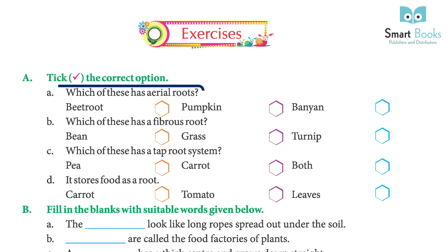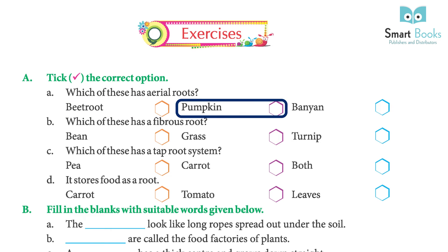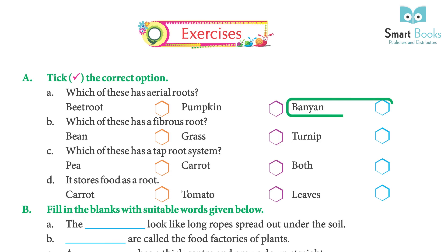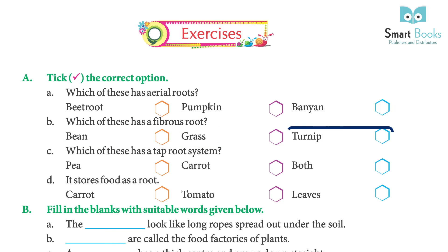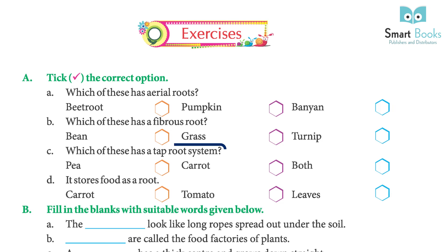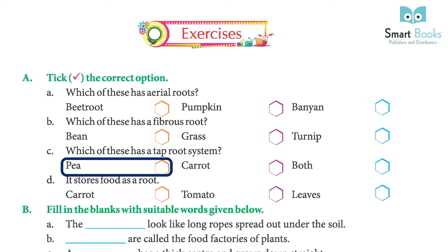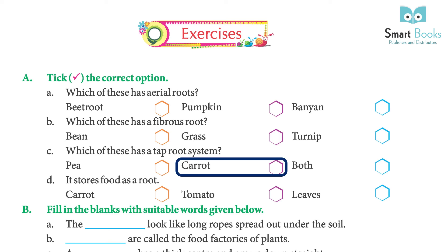Exercise — tick the correct option. A: Which of these has aerial roots? Beetroot, pumpkin, or banyan? Answer: banyan. B: Which of these has a fibrous root? Bean, grass, or turnip? Answer: grass. C: Which of these has a taproot system? Pea, carrot, or both? Answer: both.